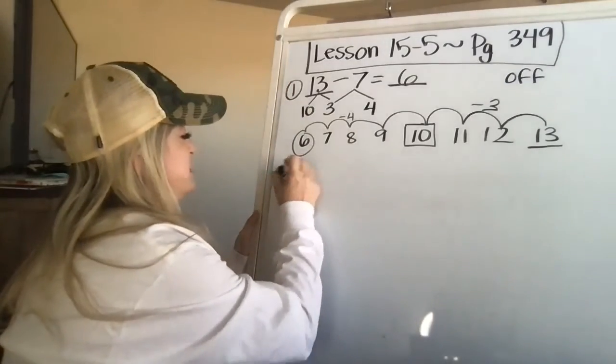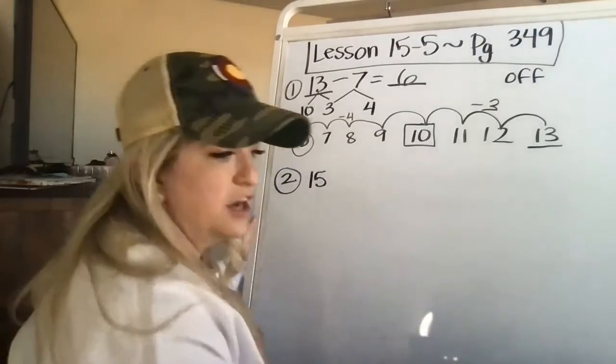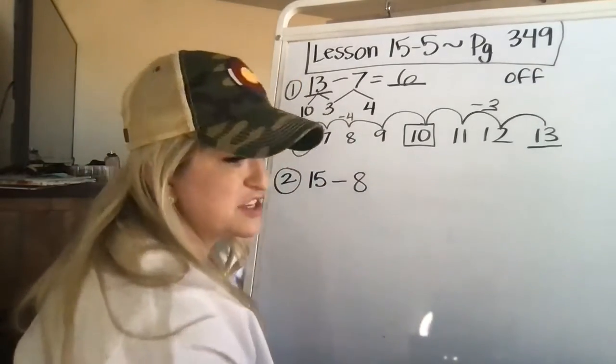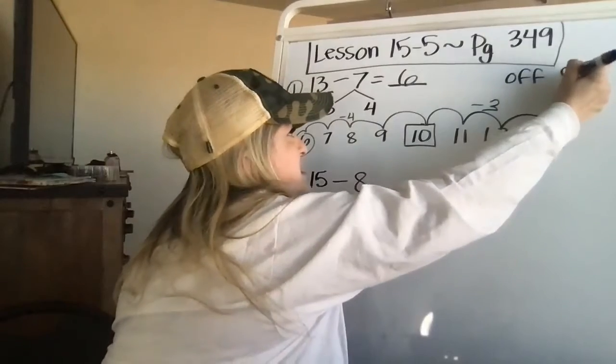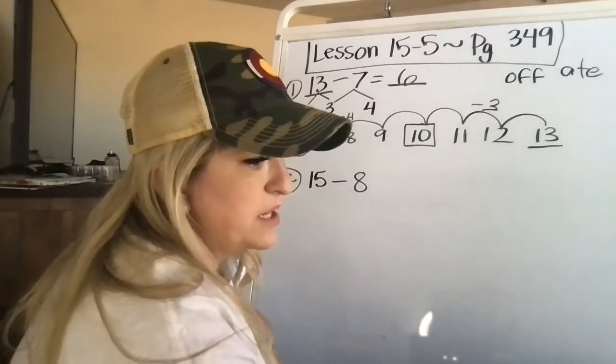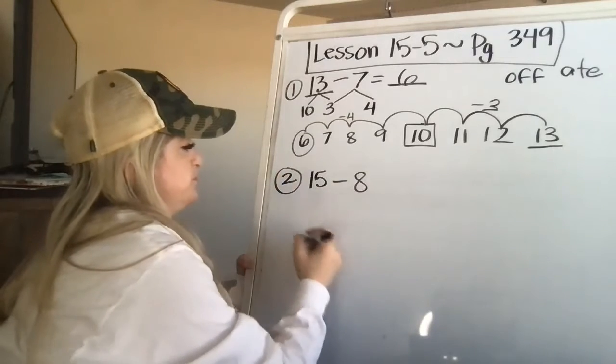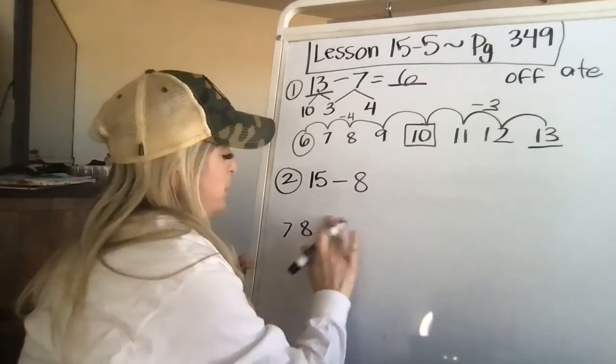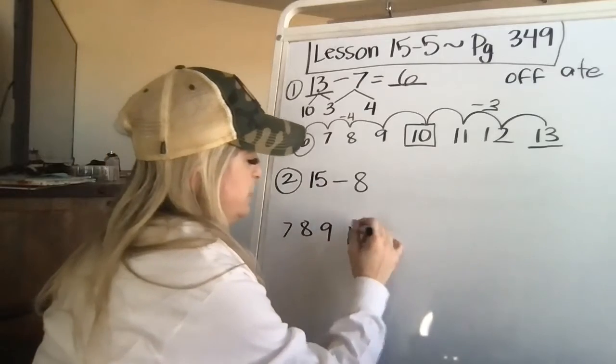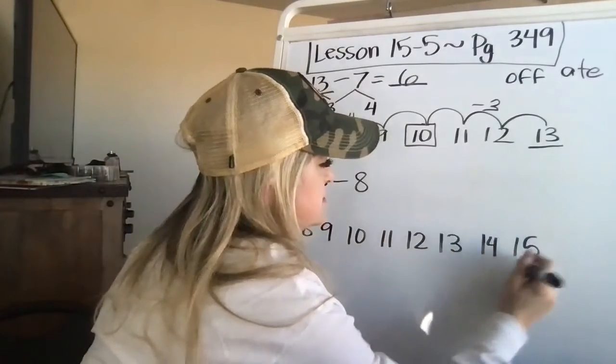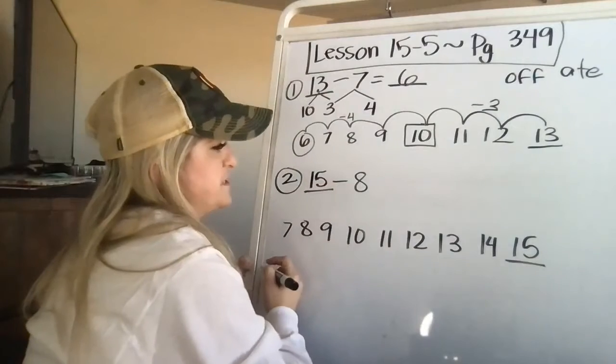Number two, Kay has 15 pecans. Yeah. Those are nuts. They're so good. She eats eight of them. That means they're gone. So eight is another word clue. Okay. How many are left? So we're going to do, oh my goodness, my brain is really not working today. Some days you have good days and some days you have bad days. 15 minus eight.